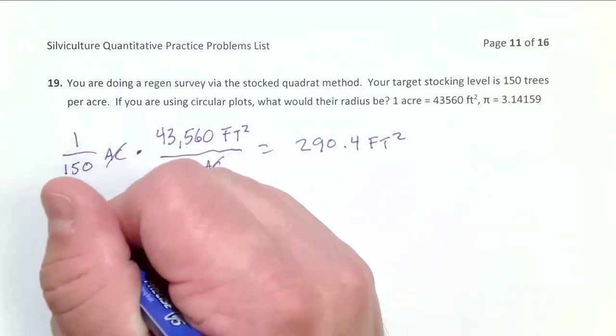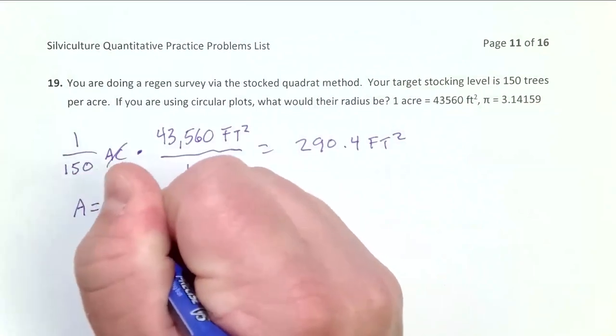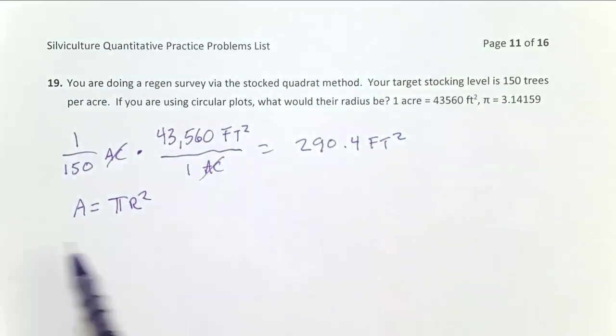So the same process we've done before. We know area equals pi r squared. We have the area. We want the radius. Let's solve for r again.